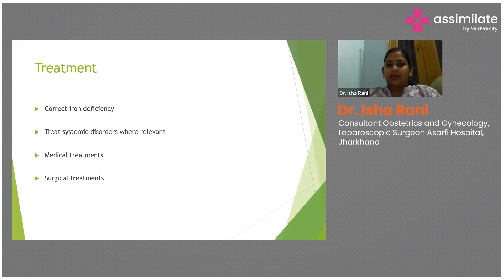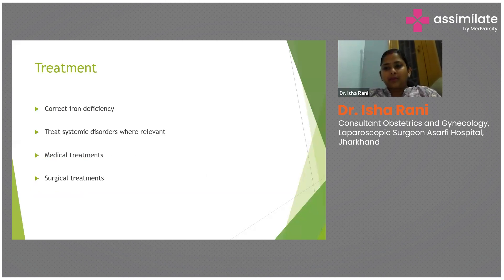Coming to treatment: menorrhagia leads to anemia which hampers the day-to-day activity of the patient. First and foremost, iron deficiency must be corrected. Secondly, any underlying systemic disorder must be treated — for example, if a patient is hypothyroid and menorrhagia is due to hypothyroidism, hormonal pills will only temporarily stop symptoms without treating the root cause.